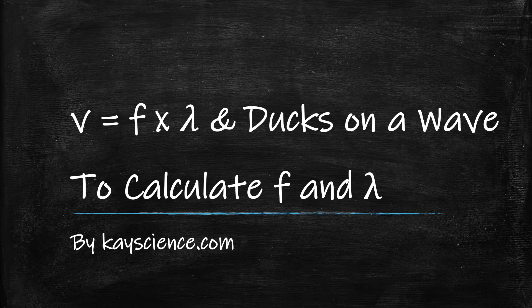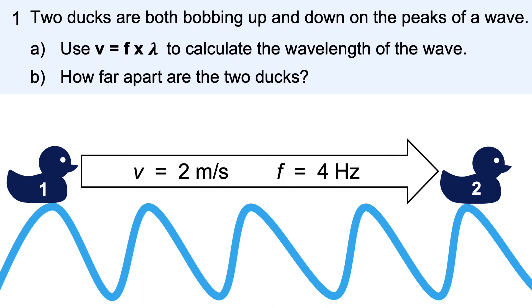V equals F times lambda — ducks on a wave — to calculate frequency and wavelength, by KScience.com. This is the problem you will learn how to solve. Press pause to attempt it. The method and the answer will follow.